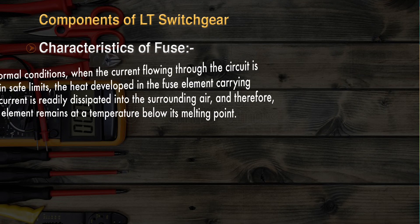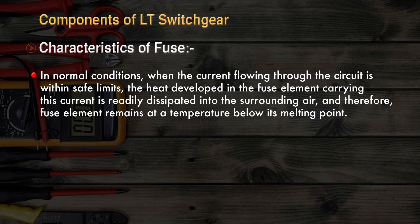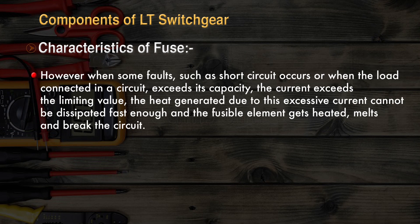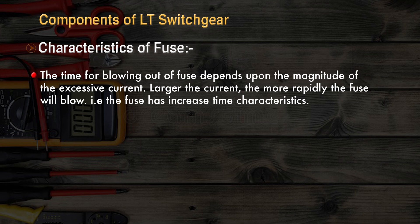In normal conditions, when current flowing through the circuit is within safe limits, the heat developed in the fuse element is readily dissipated into the surrounding air and the fuse element remains below its melting point. However, when a fault such as short circuit occurs or the load exceeds its capacity, the excessive current generates heat that cannot be dissipated fast enough, causing the fuse element to heat up, melt, and break the circuit. The time for blowing out depends upon the magnitude of excessive current — larger the current, more rapidly the fuse will blow.